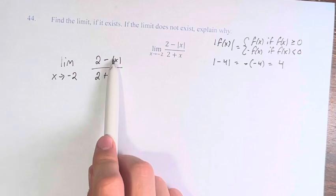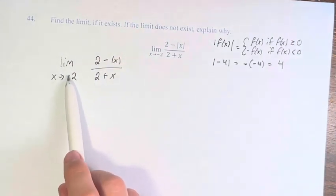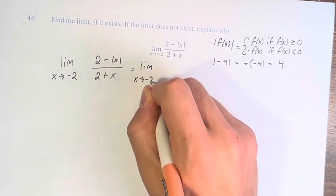Here we're taking the absolute value of x when x is approaching negative 2. So we're taking the absolute value of a negative number. Therefore, this is the limit as x approaches negative 2 of 2 minus negative x.